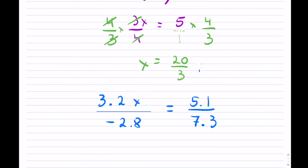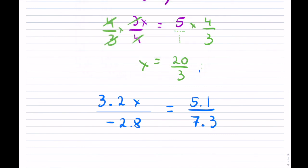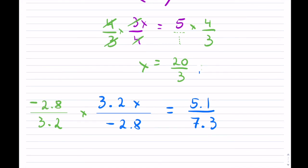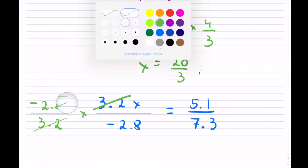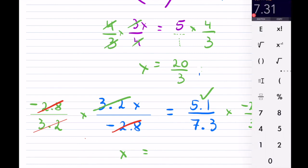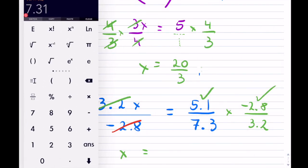You do exactly the same thing — you take the reciprocal. To get rid of the 3.2 in the numerator, divide by 3.2. To get rid of the negative 2.8 in the denominator, multiply by negative 2.8. This cancels with that, and this cancels with that. Don't forget to do the same thing on the opposite side.